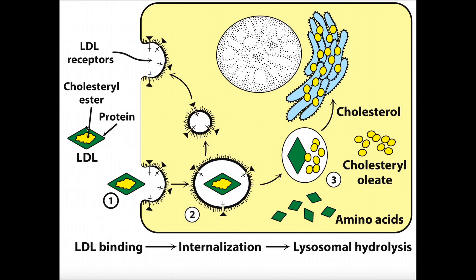You can see the general structure of this lipoprotein in green — this is the protein component. All the lipids, the things that are hydrophobic and don't like water, are packaged on the inside in yellow. One of those is the cholesterol ester.